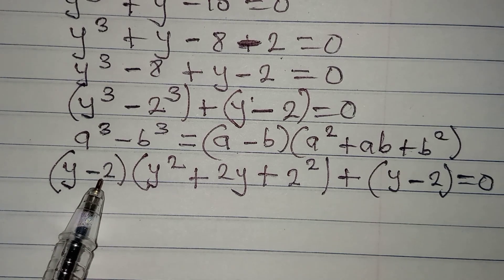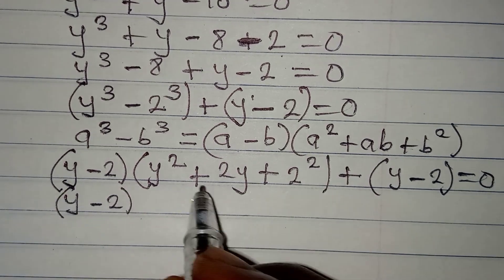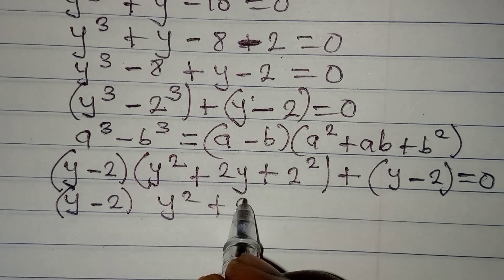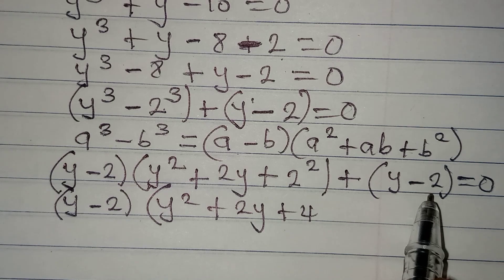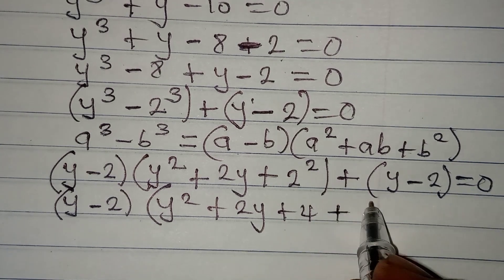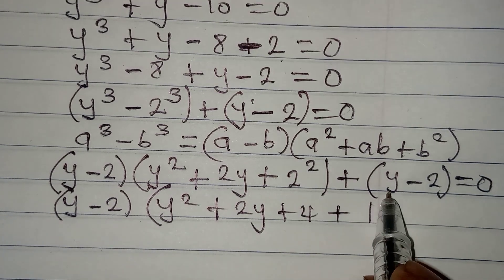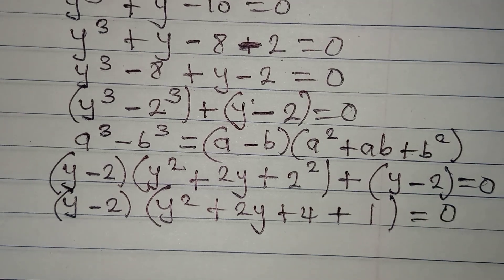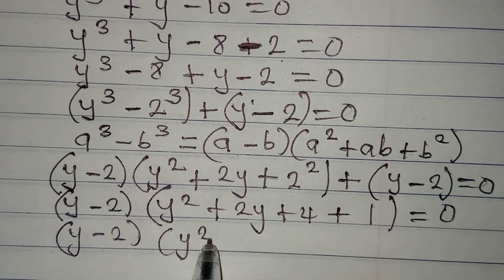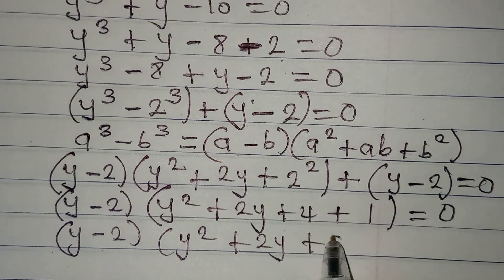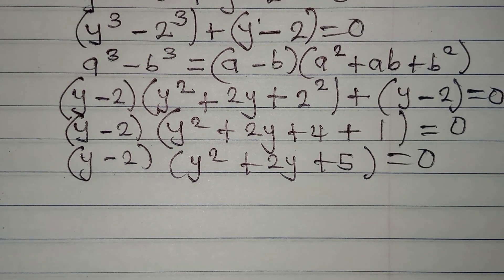We have y minus 2 and y minus 2 — we can factor it out as a common factor. From the first bracket we get y squared plus 2y plus 4, and then y minus 2 divided by y minus 2 gives plus 1. Adding together: y minus 2, times y squared plus 2y plus 5, is equal to 0.